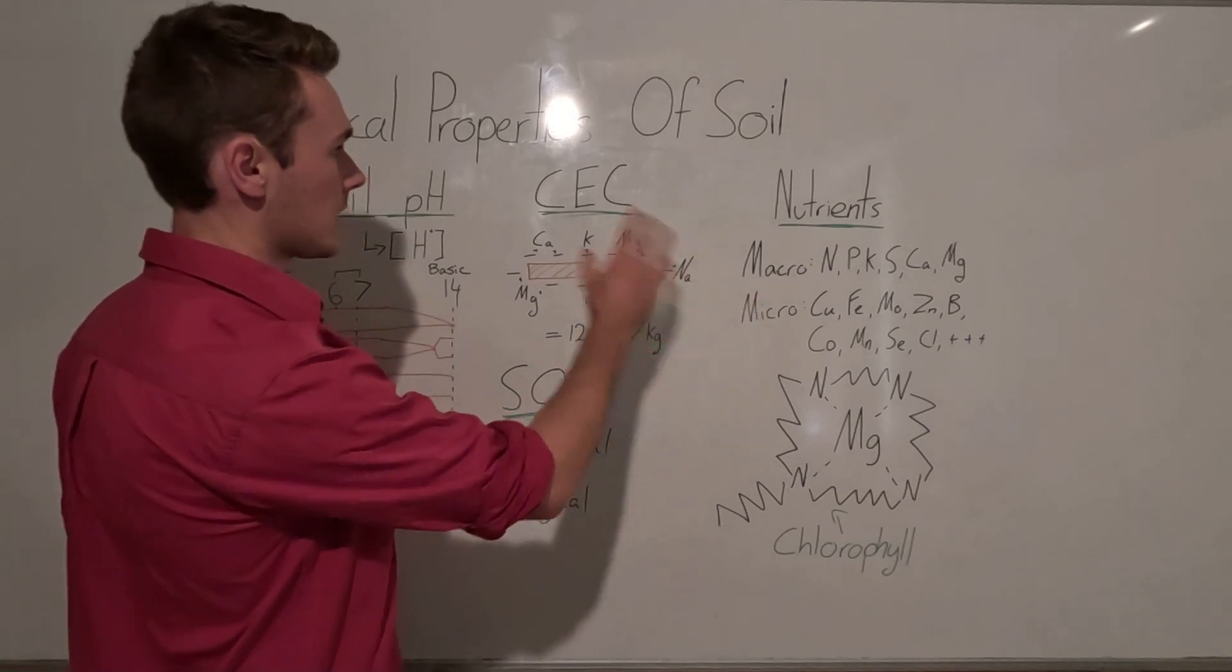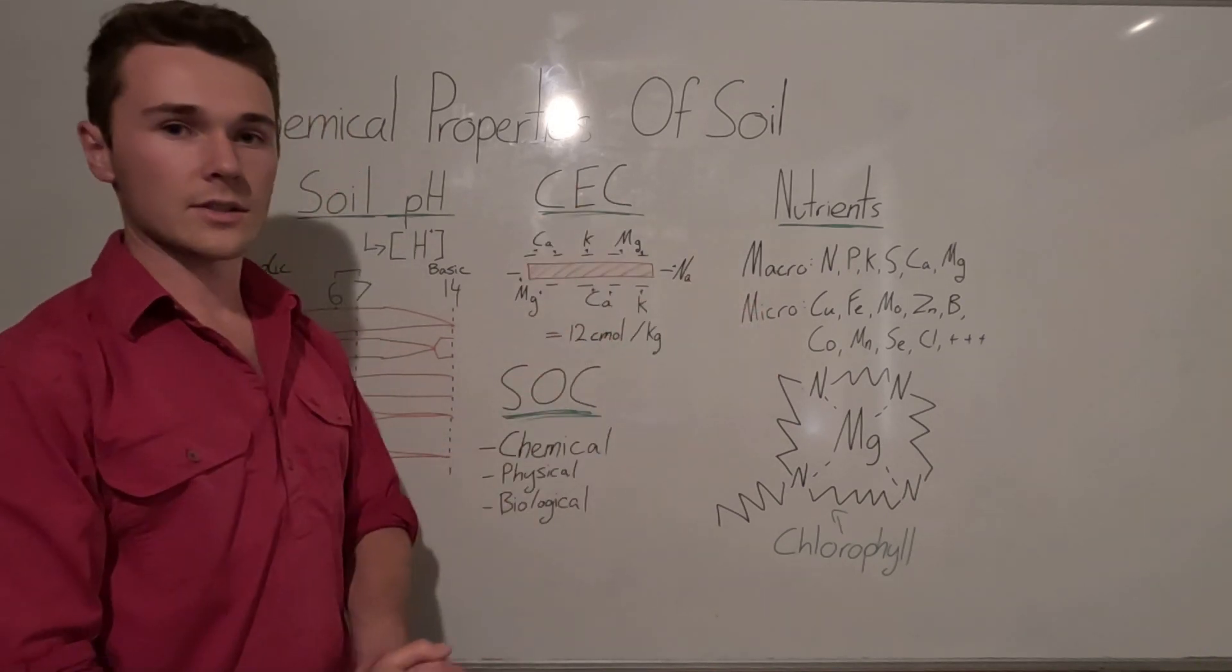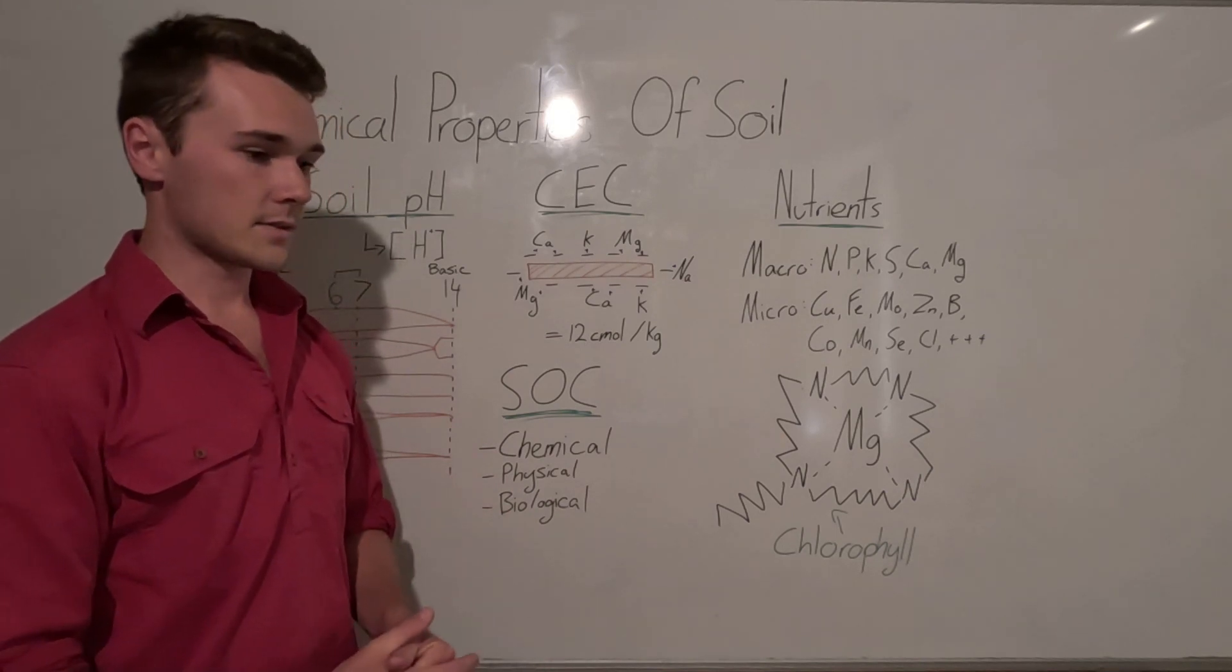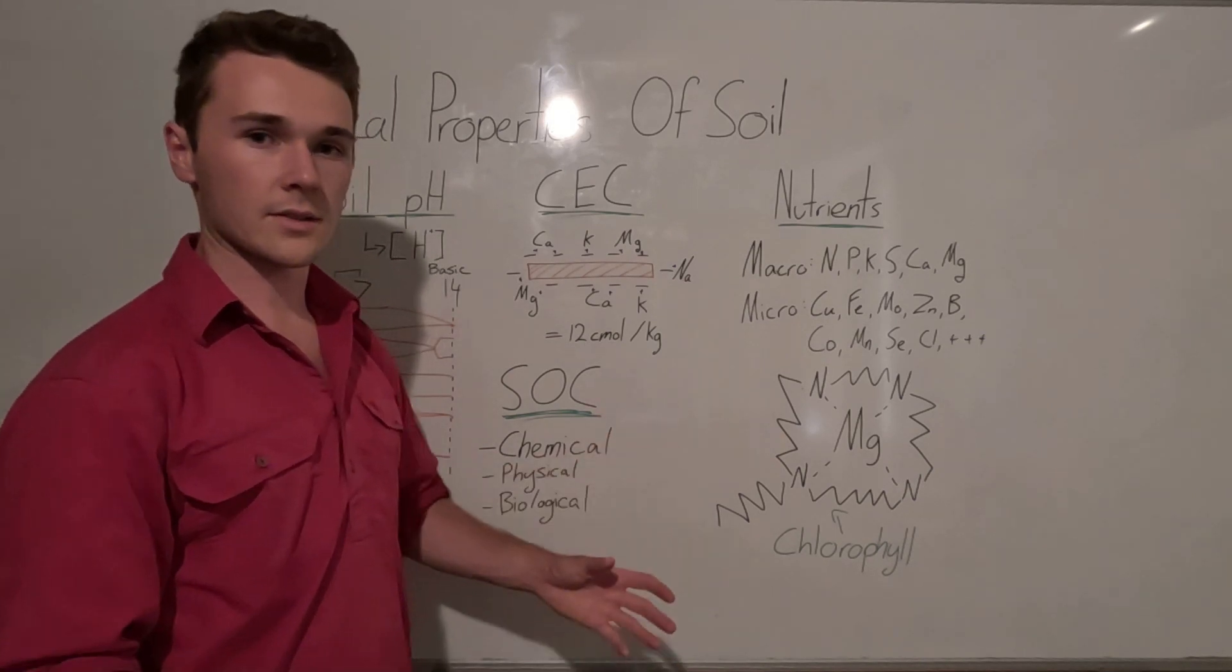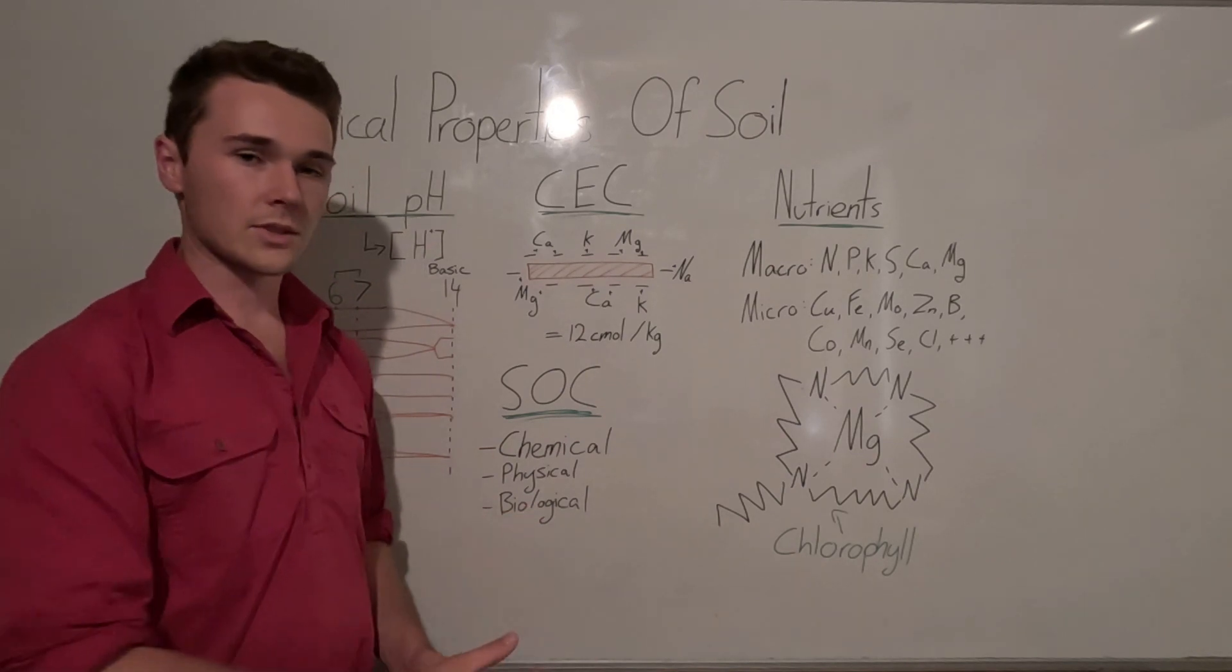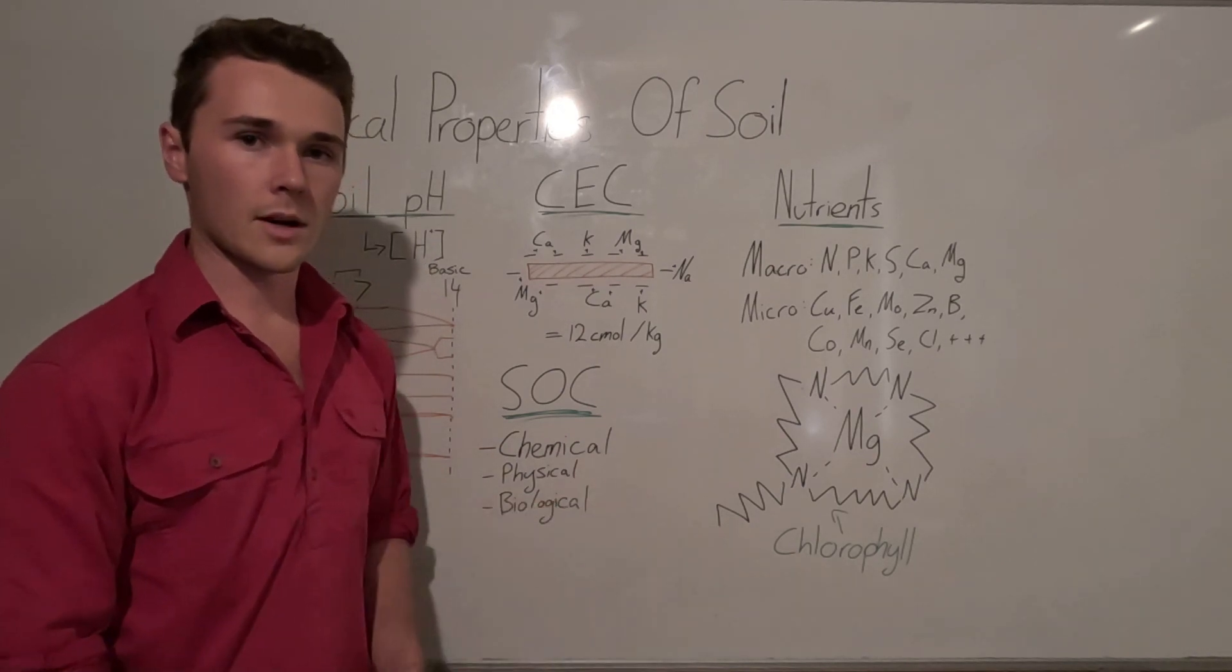So that's like buffering pH, so it keeps our pH in a correct range. It supplies nutrients. It increases our cation exchange capacity. There's also physical benefits to soil organic carbon such as increasing the structure of our soil, increasing porosity, and there's also the biological benefits which is creating habitat and food for our microbes.